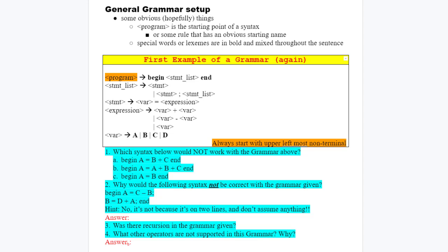Number two, why would the following syntax not be correct with the grammar given? And then again, the hint is, no, it's not because it's on two lines and don't assume anything. The don't assume anything is really meant for you and me.